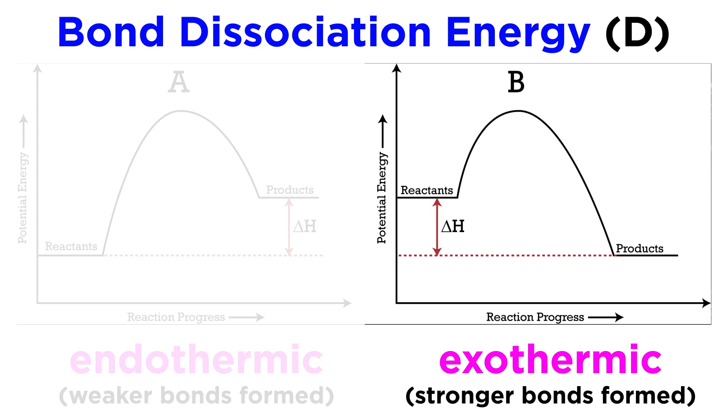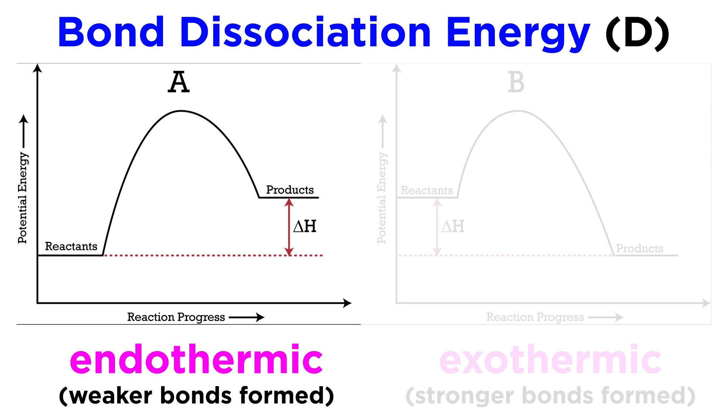Because exothermic reactions result in products that sit lower on an energy diagram than the reactants, it means that over the course of the reaction, weaker bonds are replaced by stronger bonds. For an endothermic reaction, stronger bonds are replaced by weaker bonds.